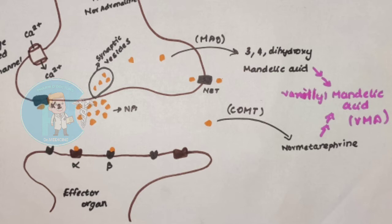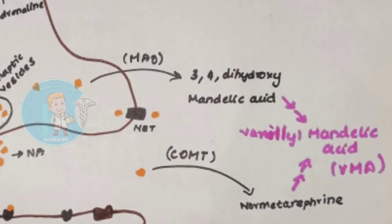In the presynaptic vesicles, there is a transporter called NET or Norepinephrine Transporter. Through that channel, noradrenaline can be taken back up into the presynaptic vesicles and stored again for future utilization.